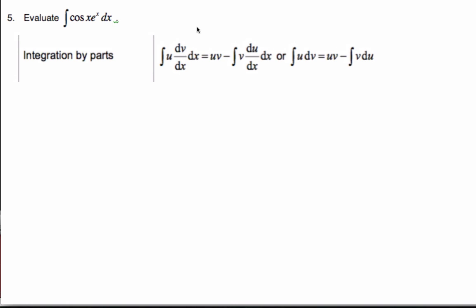And so I have to choose my u and my dv. And my guideline for choosing my u is the polynomial or ln(x). There is no polynomial here. There is no ln(x). So I have to be creative.